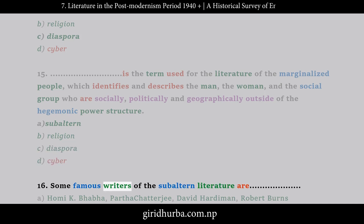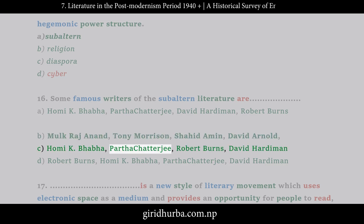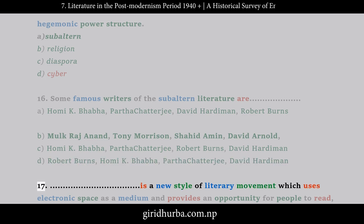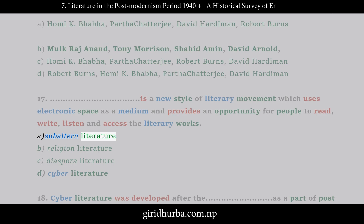Question 16: Some famous writers of the subaltern literature are — [answer not stated]. Question 17: Which is a new style of literary movement that uses electronic space as a medium and provides an opportunity for people to read, write, listen, and access literary works? A. Subaltern Literature. B. Religion Literature. C. Diaspora Literature. D. Cyber Literature.